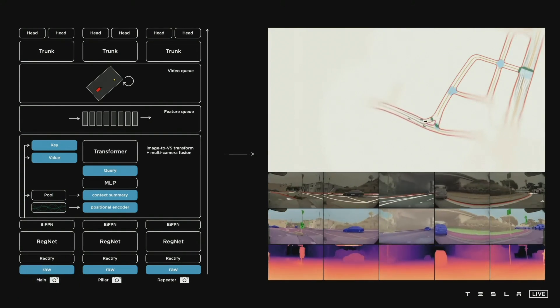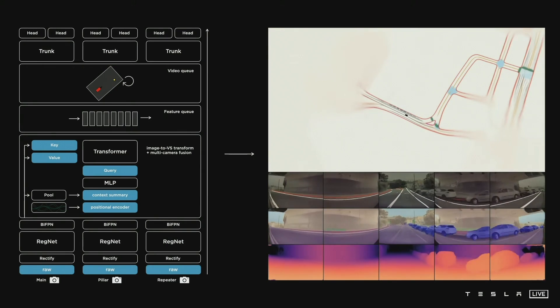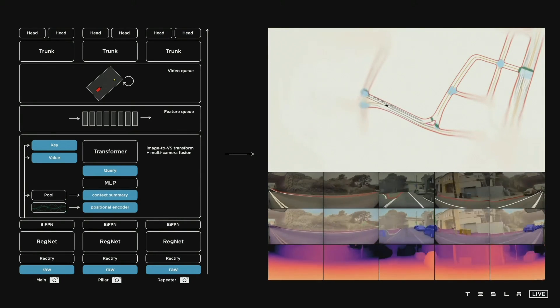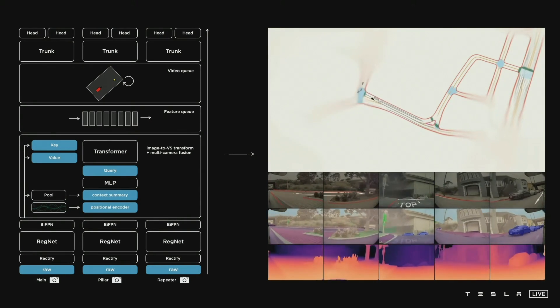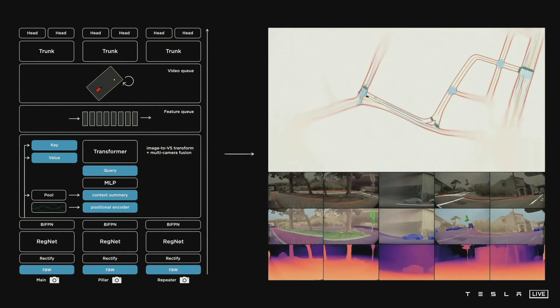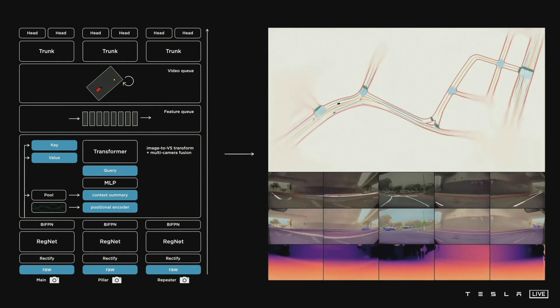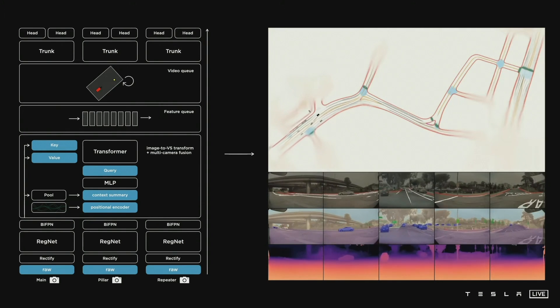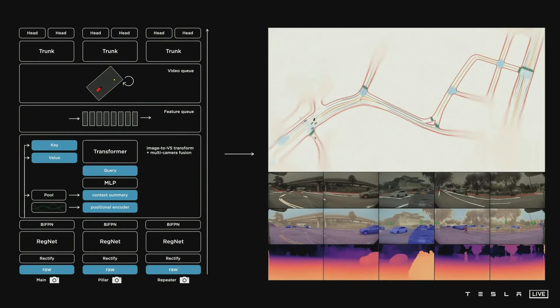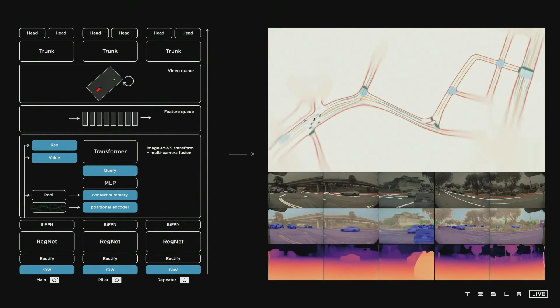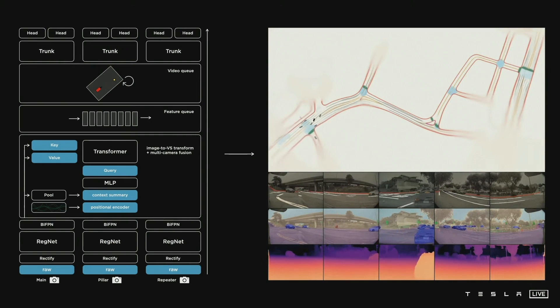To process them into a number of features at different scales. We fuse the multi-scale information with Bifocal. This goes through a transformer module to re-represent it into the vector space and the output space. This feeds into a feature queue in time or space that gets processed by a video module like the spatial RNN and then continues into the branching structure of the HydraNet with trunks and heads for all the different tasks.